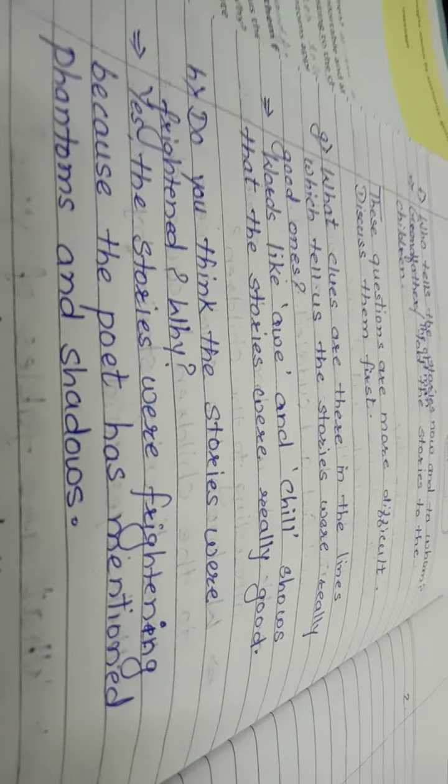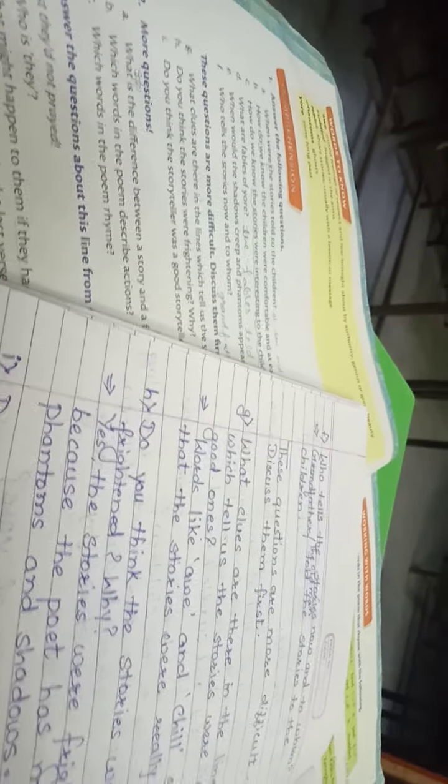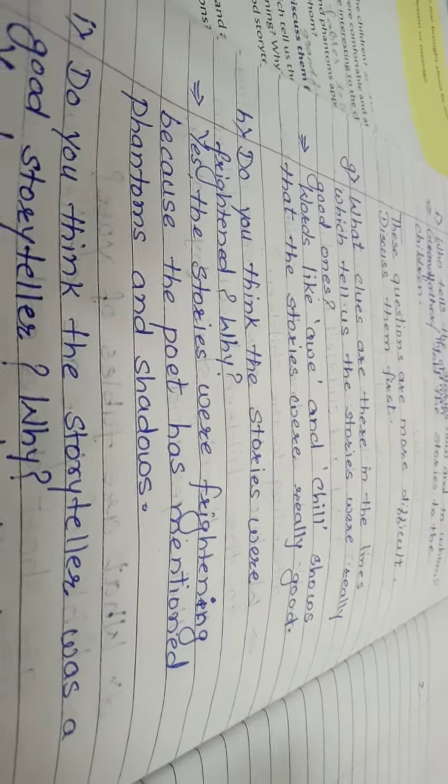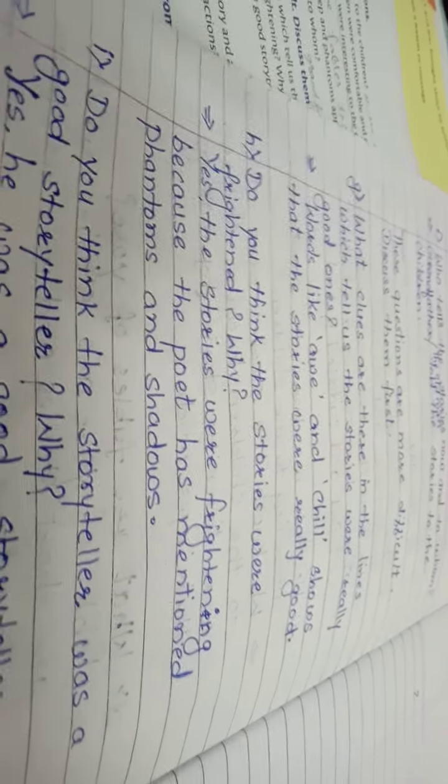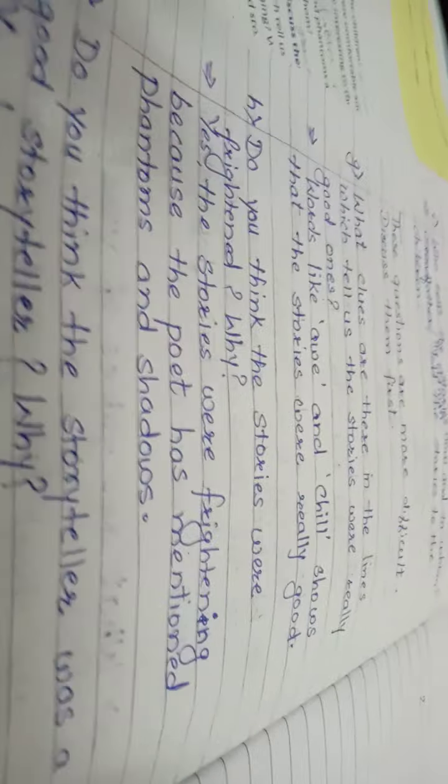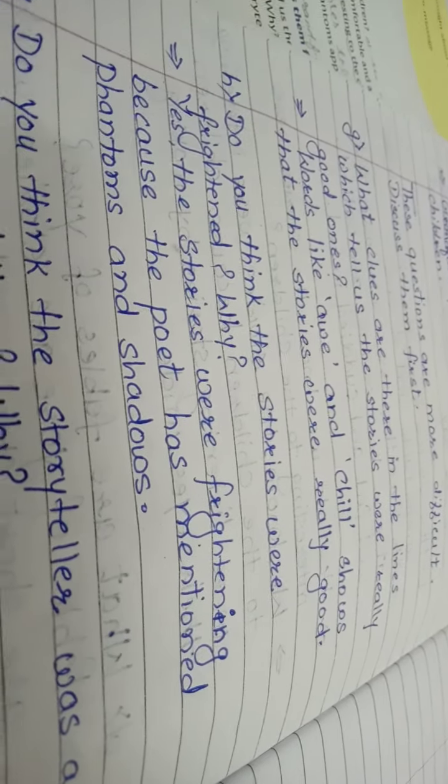Haini jho poet jho hai unko jho kehani bata rhea hai. Unhone kaunse words use ki hai us mein? Phantoms jho ghosts hote hai. Bhut pret hote hai. Haini na? Parchhaiya hote hai. Is baare mein unko bata rhe hai stories mein. To ye words jho hai ye hamko bataata hai ki stories bhaat frightening hai. Bhaat daraavni hai.